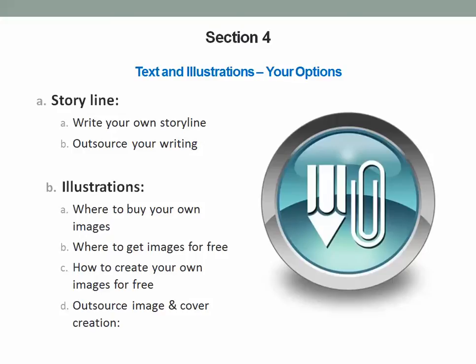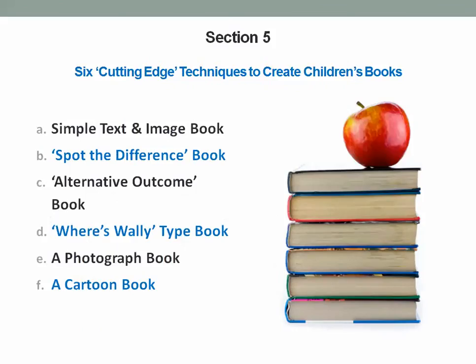The next section is the core of it — where I give you the real useful and innovative techniques for creating children's books, all very popular. We've got six types. The first is text and image: a simple book where you write a story and get it illustrated. The next is a spot-the-difference type of book — kids love this. Then we have an alternative outcome book, which kids really like — that's a newer type of book. I show you in over-my-shoulder videos how to create books in each and every one of these genres.